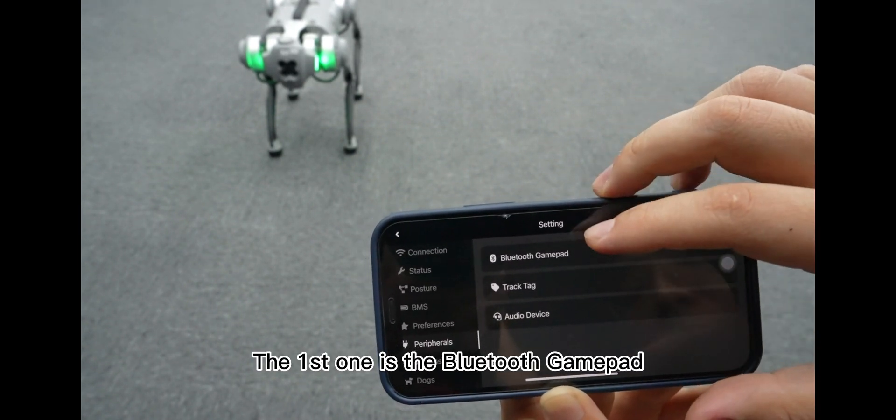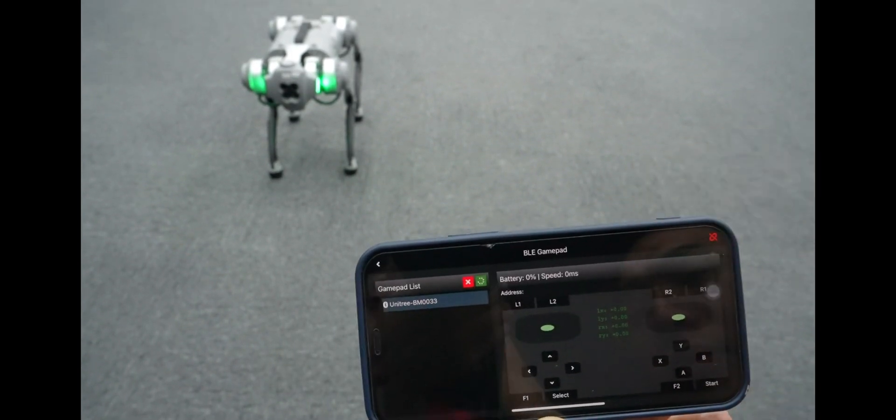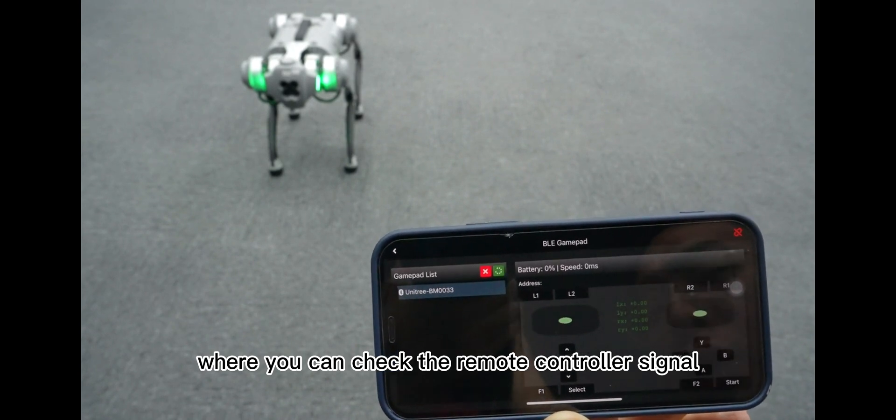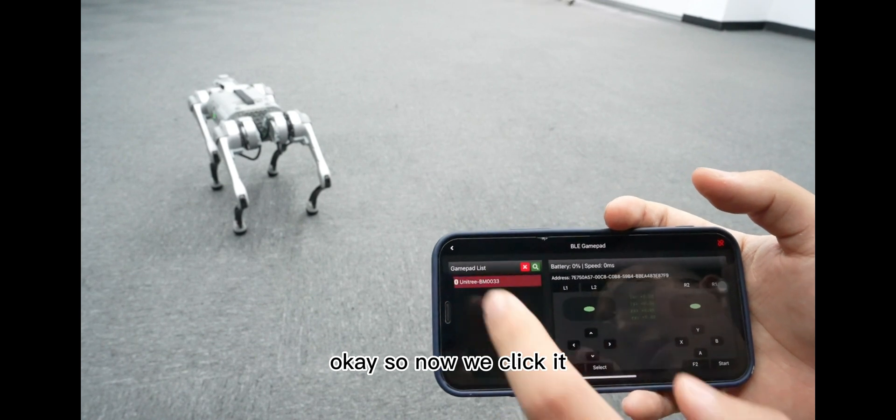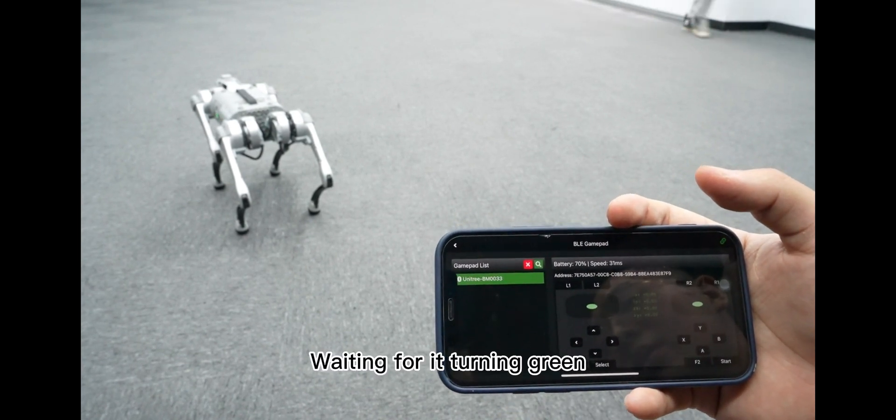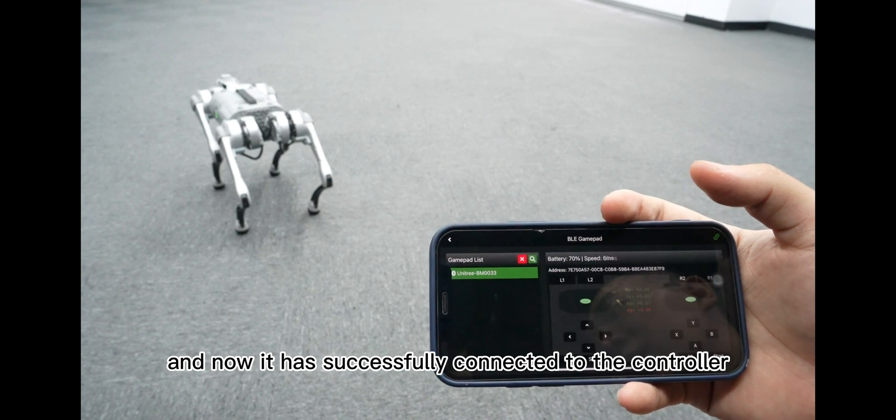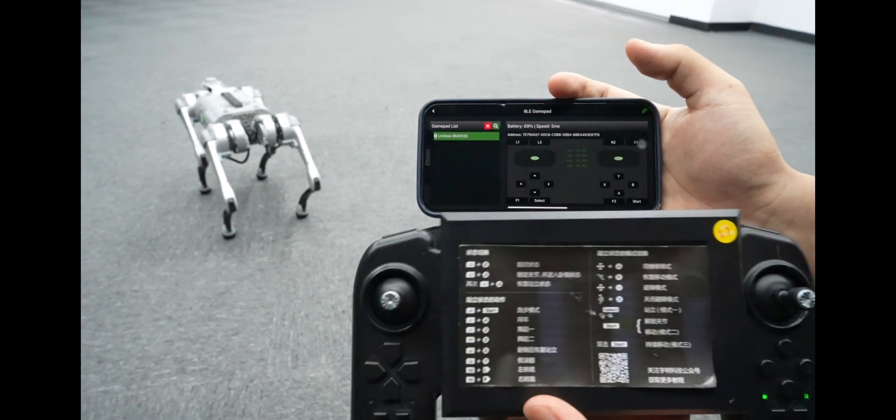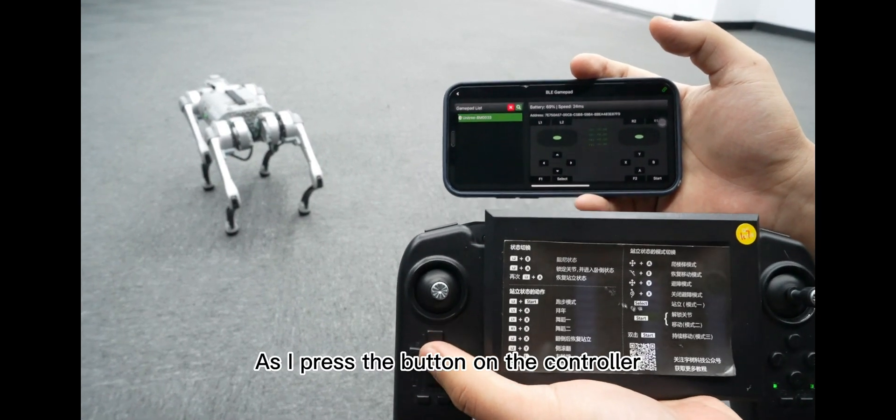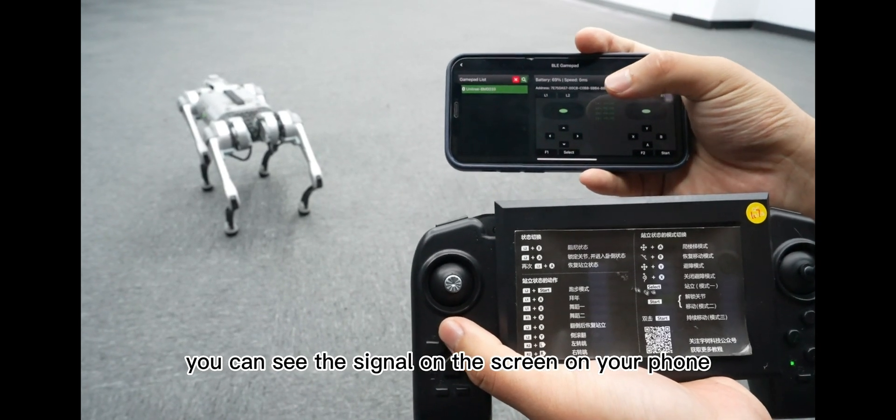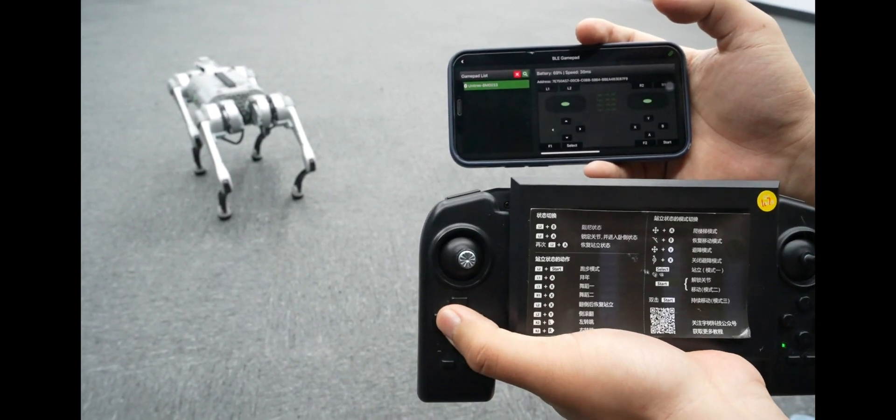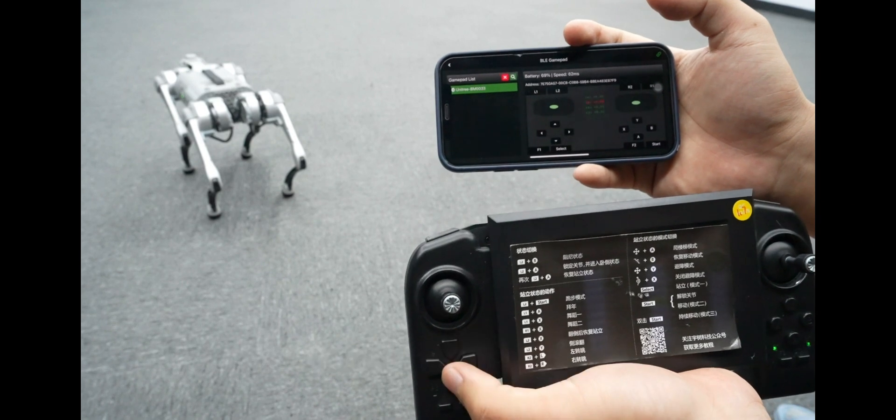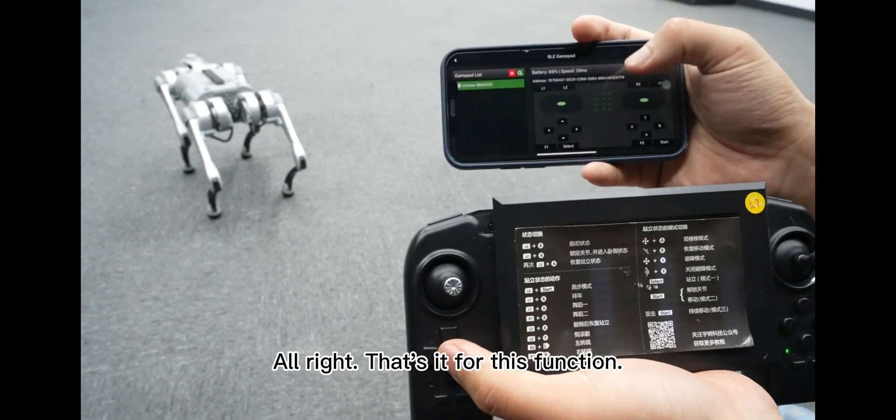The first one is Bluetooth gamepad where you can check the remote controller signal. So now we click it, waiting for it turning green, and now it has successfully connected to the controller. So now we have the controller over here. As I press the button on the controller, you can see the signal on the screen on your phone. And then you should be able to check whether it's working or not for all buttons. That's it for this function.